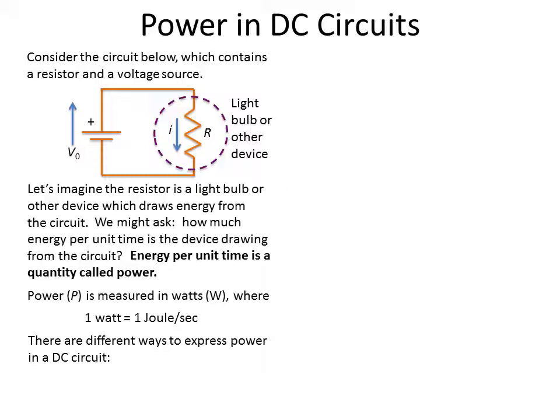Now there's a couple different ways we can express the power in this circuit. And the first is a very common one: the power is equal to the current flowing through the circuit times the voltage drop. Another way we can express this is the current squared times the resistance in the circuit, or we can look at the voltage squared divided by the resistance. And all three of these are the same exact thing, or we can get to these by using Ohm's law.